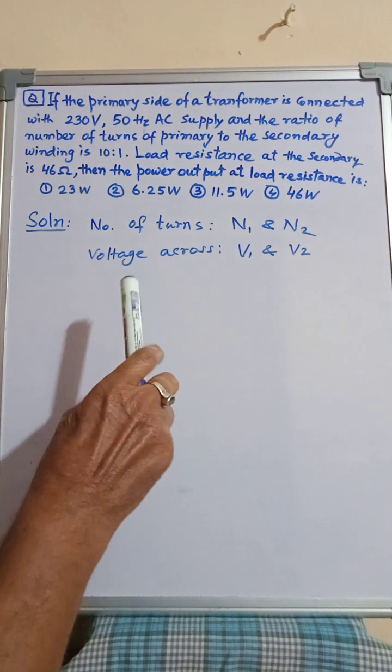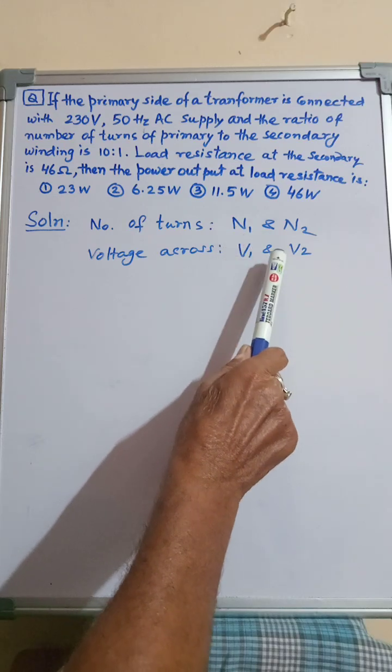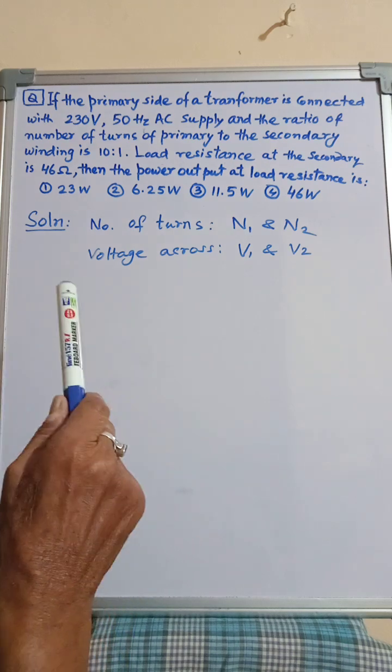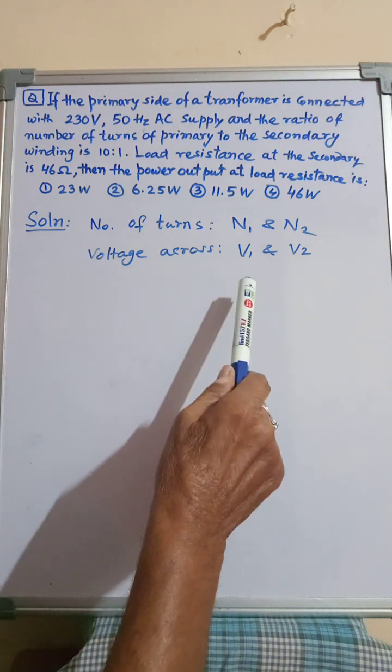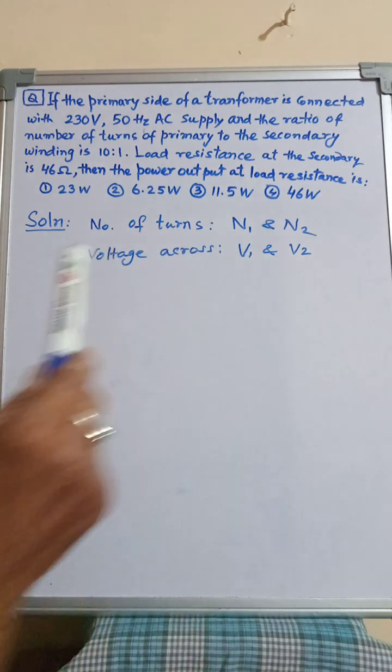Let the number of turns of primary be N1 and that of secondary is N2. And voltages across the primary is V1 and across the secondary is V2.